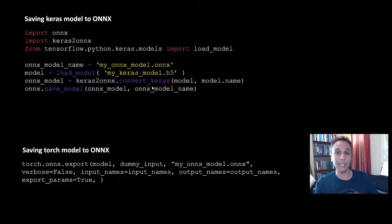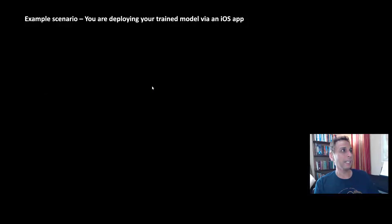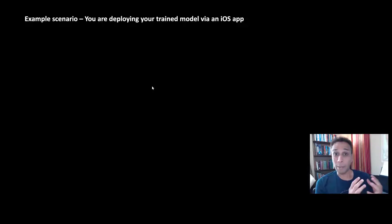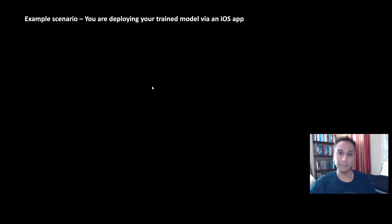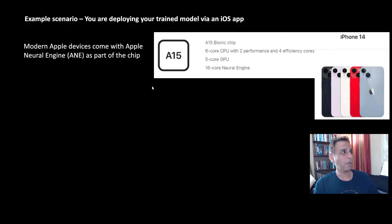I hope you understand the core essence of ONNX. Let me walk you through a hypothetical scenario. Let's say you're deploying your trained model via an iOS app. In a previous video I showed how you can deploy a trained model as a web application using Heroku — that's not a native application to your device. But what if you want to develop an iOS app where inference is happening on the device itself? Modern Apple devices come with the Apple Neural Engine, called ANE, which is part of the chip.